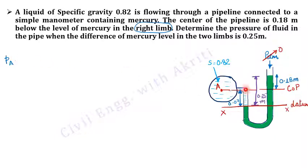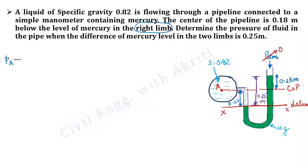I am coming downward from this point to the datum level. Why datum? Because if we go below the datum on one side, we go equally up on the other side. Both limbs contain mercury, so it balances out — plus on one side, minus on the other. Same liquid on the same level acts as datum. So PA plus — we came down 0.07 meters in fluid of specific gravity 0.82, into 10³ (density of water) into 9.81.